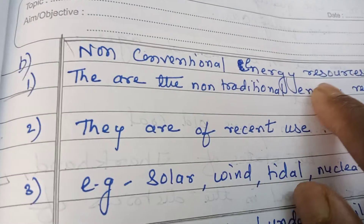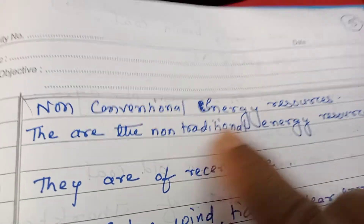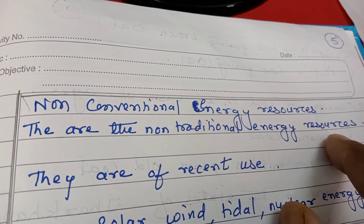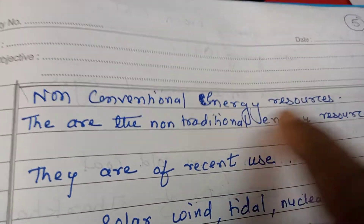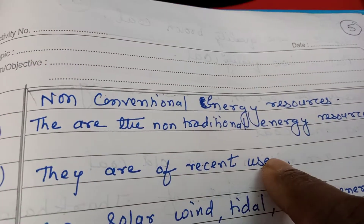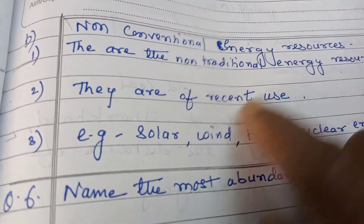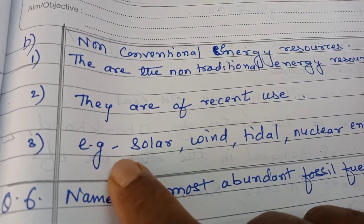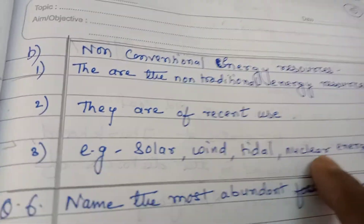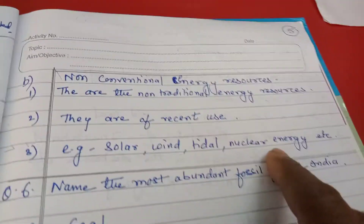Non-conventional sources of energy are the non-traditional energy resources and are of recent use. Examples include solar energy, wind energy, tidal energy, nuclear energy, etc.